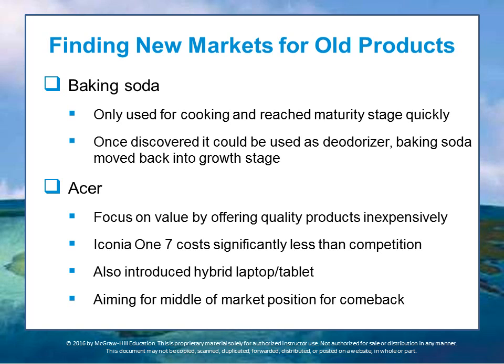It should be noted that product stages don't always follow the same path. Some products that moved to maturity or decline can rebound through a redesign or new uses. A prime example is baking soda — originally only used for baking, it reached maturity quickly. But once it was discovered as a deodorizer for refrigerators, sales shot up and bumped baking soda back into the growth stage.